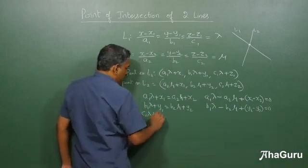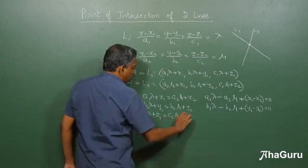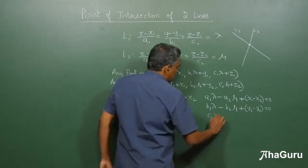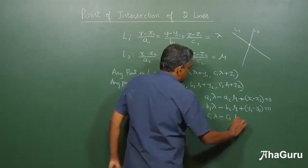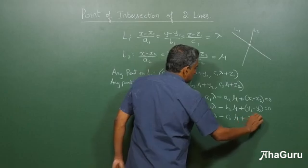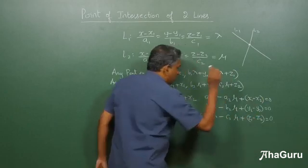And c1 lambda plus z1 is c2 mu plus z2. c1 lambda minus c2 mu plus z1 minus z2 is 0.